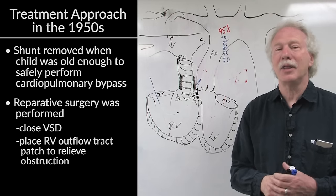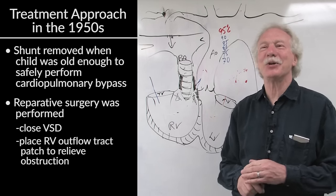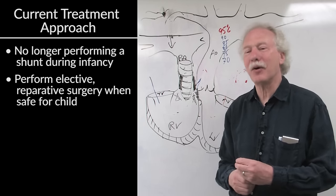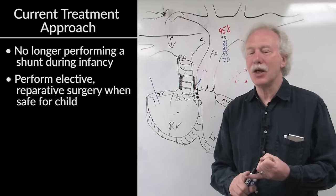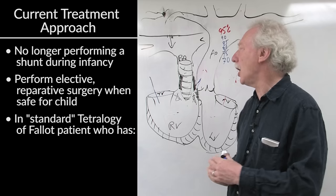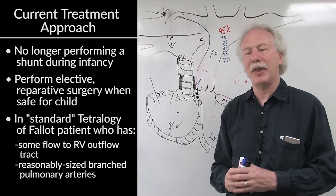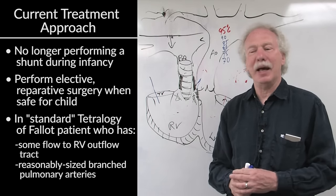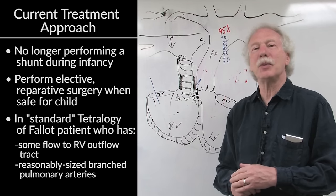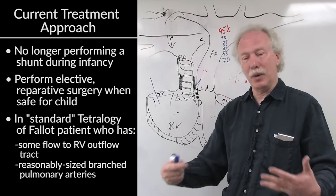With time, the strategy has changed somewhat, but exists really as it has for 50 years conceptually. At an age when you could safely perform reparative surgery, you tried to do that. In the current era, what are we talking about? We're talking about the standard tetralogy of Fallot patient, who does have some outflow to the right ventricular outflow tract, does have reasonable-sized branch pulmonary arteries. We would see that child at birth, or if we had a prenatal diagnosis, or if we were alerted because of cyanosis at birth, or a murmur from the right ventricular outflow tract turbulence.